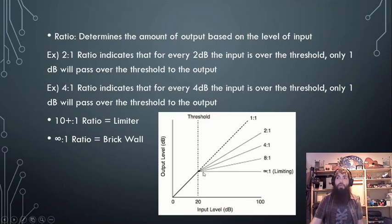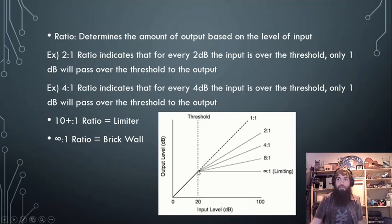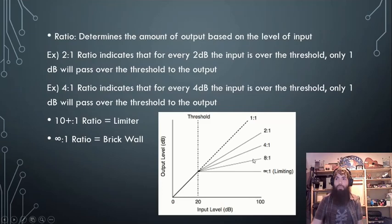So if the signal got two decibels above the threshold at a 2:1 ratio, only one decibel is allowed over. At an 8:1 ratio, for every eight decibels over the threshold, only one decibel is allowed through.